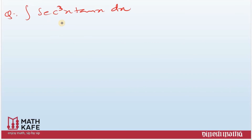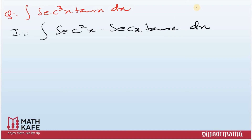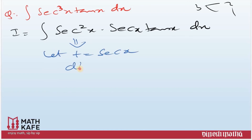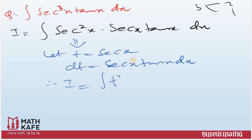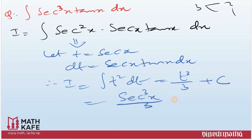Next question: ∫sec³x · tanx dx. We use a similar approach: write sec³x as sec²x · secx · tanx. The key is: let t = secx. Its derivative is secx · tanx dx, so dt = secx·tanx dx. The integral becomes ∫t² dt = t³/3 + C. Replacing t with secx: the answer is sec³x/3 + C.